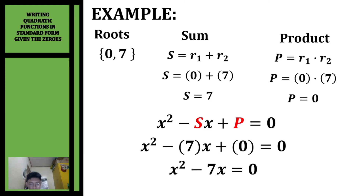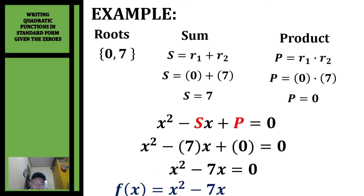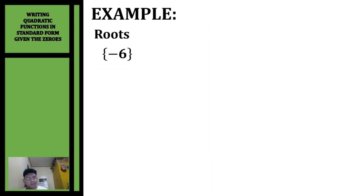Simplifying, we have x squared minus 7x equals zero. Converting to a function, f(x) = x² - 7x.